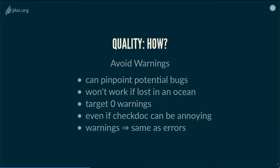If you keep ignoring some warnings, the important ones might be ignored as well. My target is always zero warnings in my code base — if I have no warnings and I write something wrong, I'll get one warning and be able to focus on it. It won't be lost in a sea of many warnings. CheckDoc can be a bit annoying since it's quite picky about doc strings, but if you pay attention you can write doc strings without warnings. For me, a warning is just like an error — I won't commit anything that has a warning.